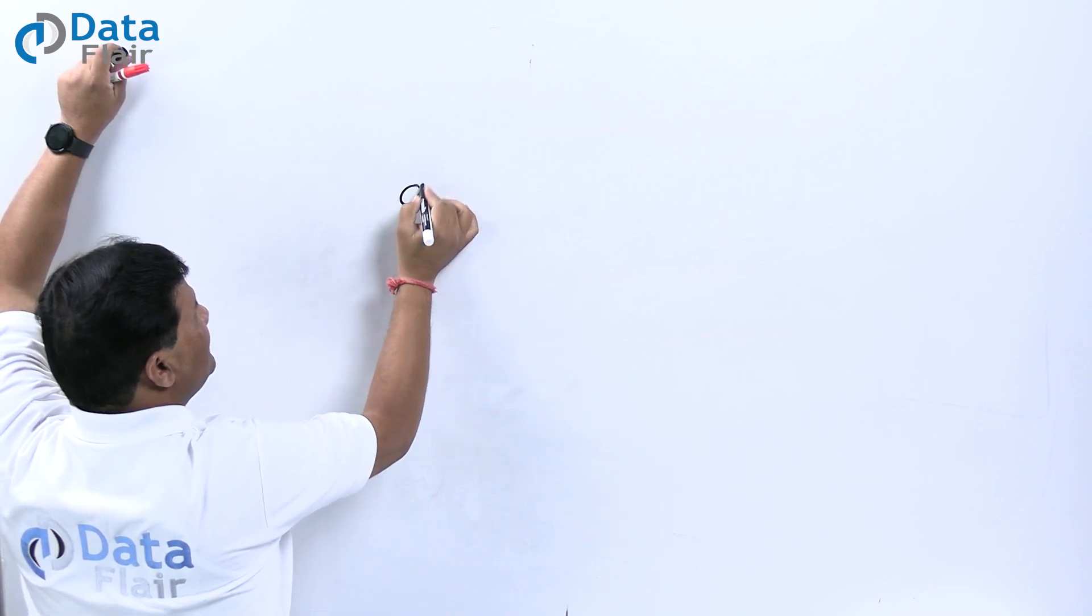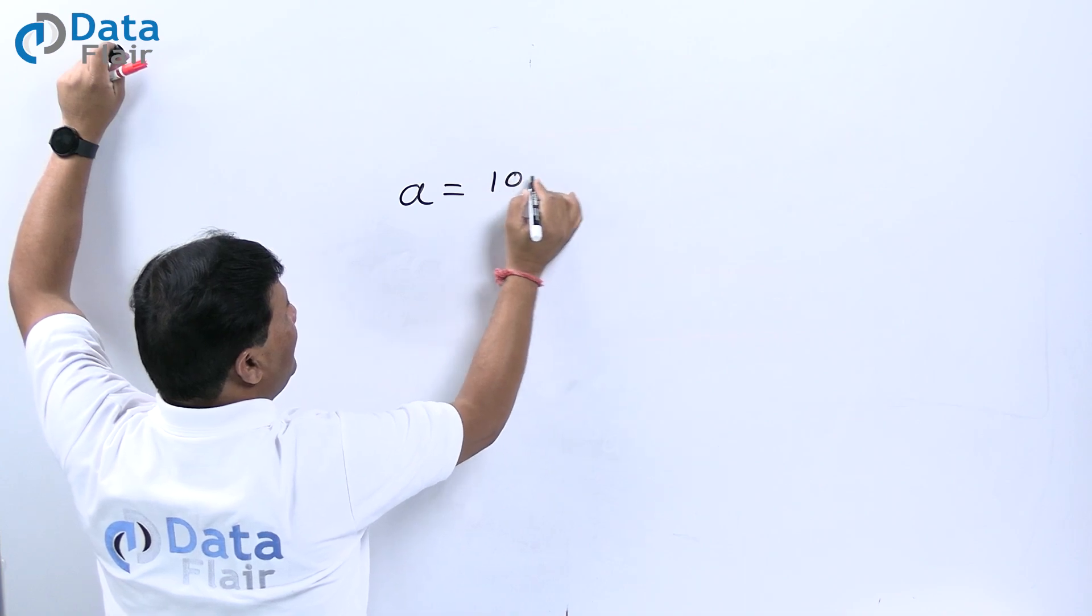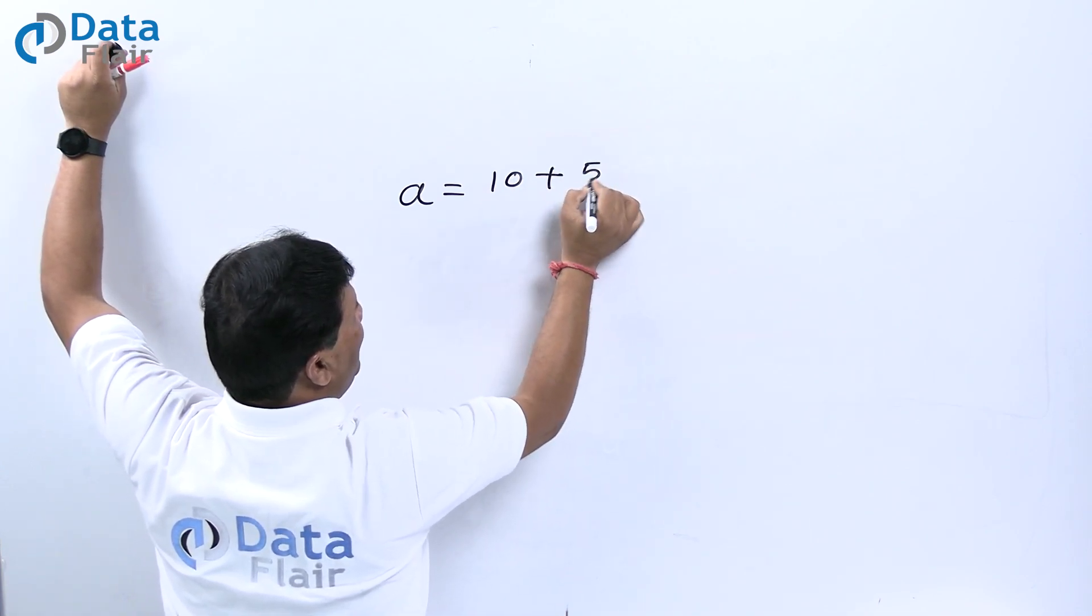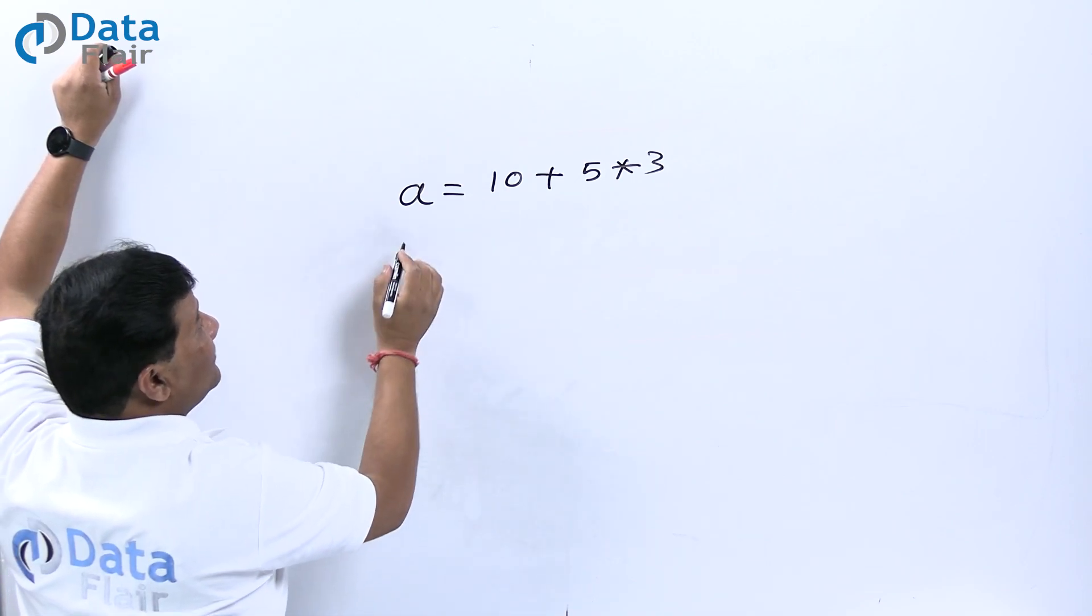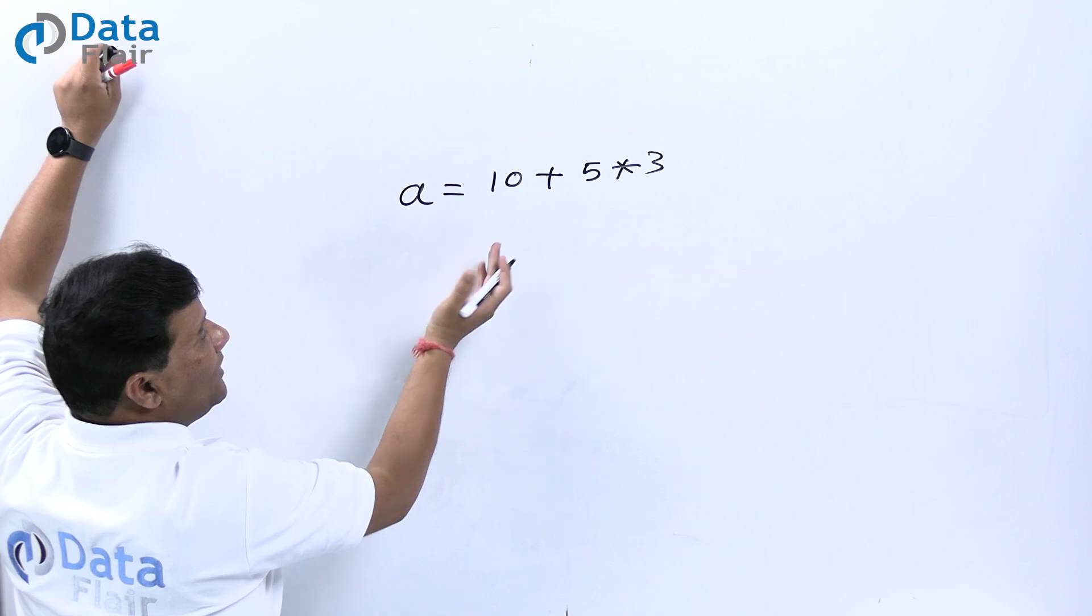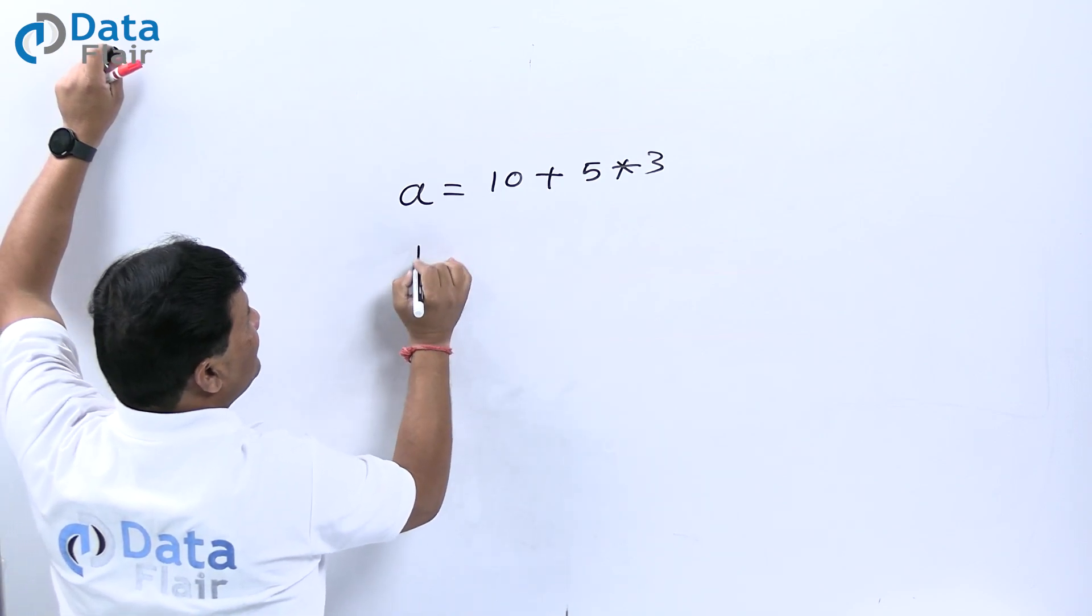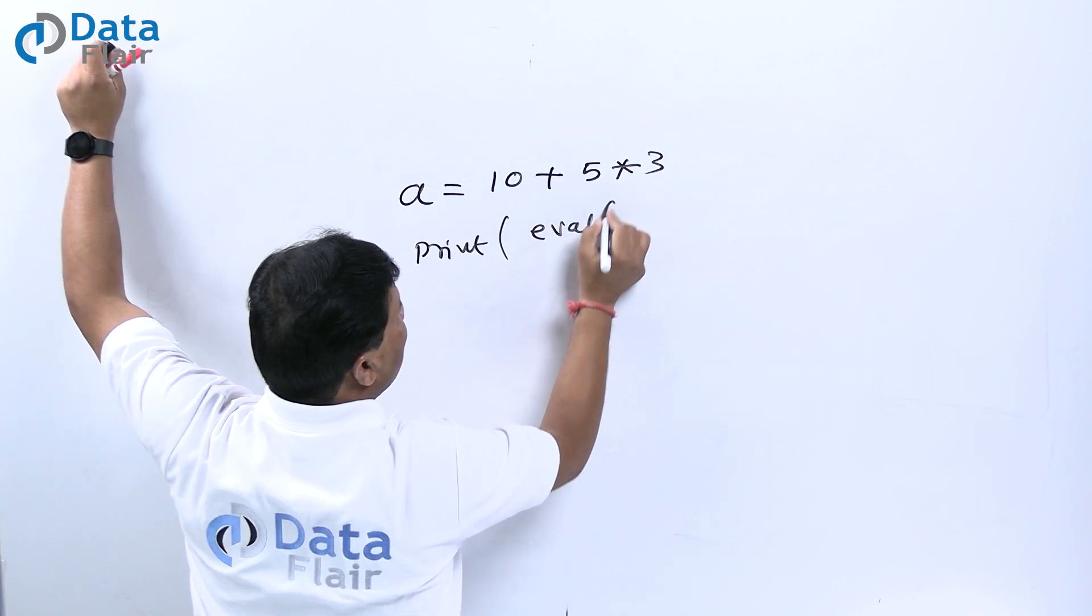Suppose I have a variable 'a' and I am having some value like 10 plus 5 multiplied by 3, and this is an expression. If I want to evaluate this expression, simply the print method will evaluate this expression.